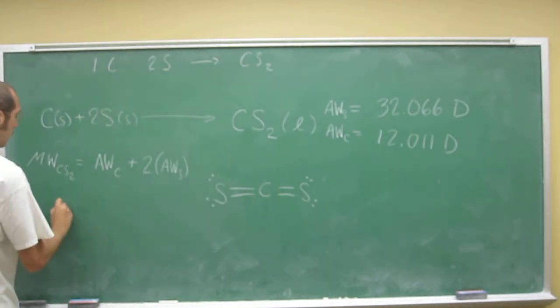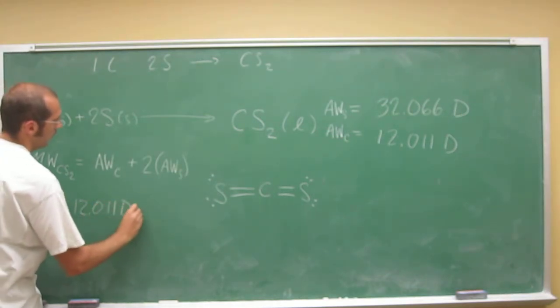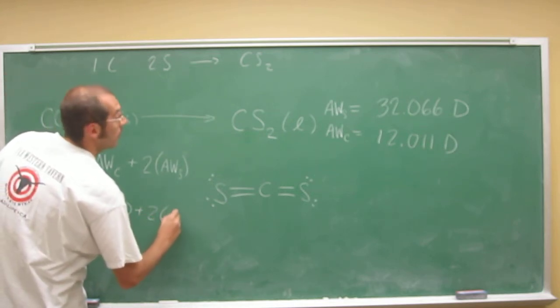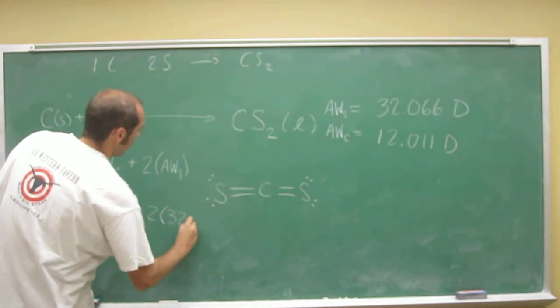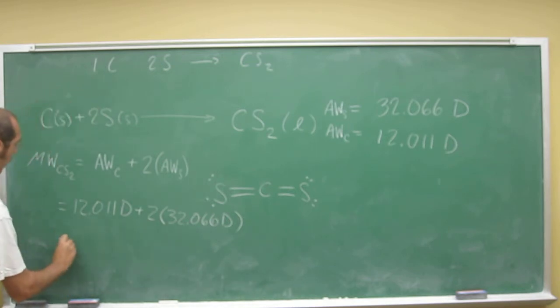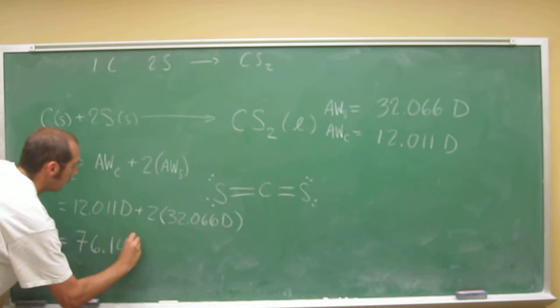Okay, so let's just do this problem now. So the atomic weight of carbon is 12.011 Dalton or AMU, same thing, plus two times 32.066 Dalton. So 2 times 32.066 plus 12.011, and we get 76.143 Dalton.